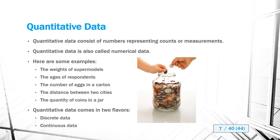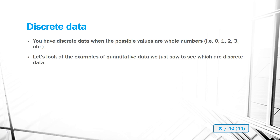Quantitative data can be further subclassified into discrete data and continuous data. Discrete data consists of whole number values — these are counts. If the value represents something counted in whole units, you're looking at discrete data. Let's look at the earlier examples and determine which are discrete.